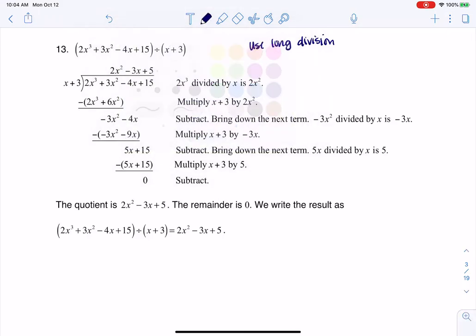I put my divisor here, I put my dividend here, and then it's all about lead terms. The lead term here is x, and the lead term here in my dividend is 2x cubed.